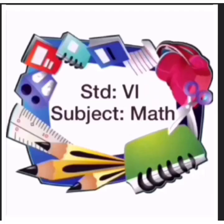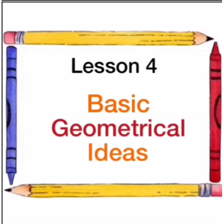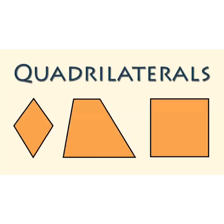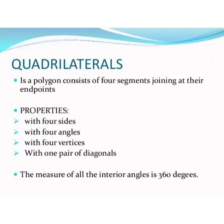Welcome back children to lesson number 4, basic geometrical ideas. Today in this chapter we will learn about quadrilaterals. We have already learned that a polygon is formed by 3 or more line segments. A quadrilateral is a polygon which consists of 4 line segments joining at their end points.